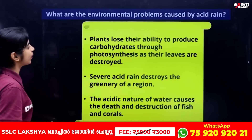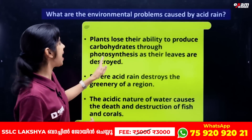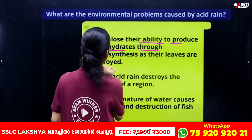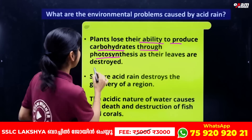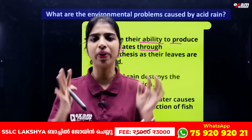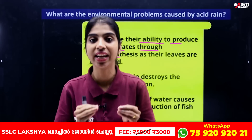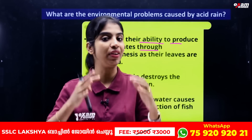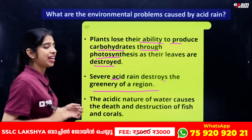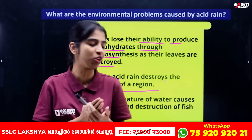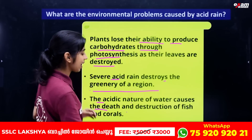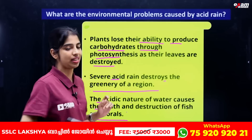Plants lose their ability to produce carbohydrates through photosynthesis as their leaves are destroyed by acid rain. The acidic nature of water also causes death and destruction of fish and corals.